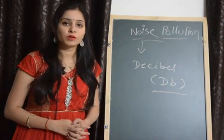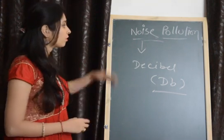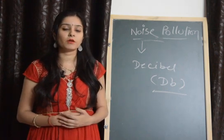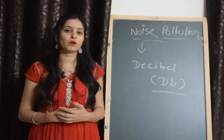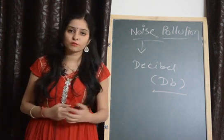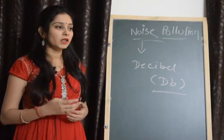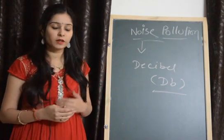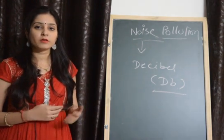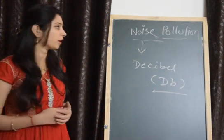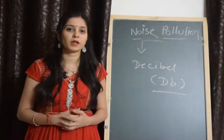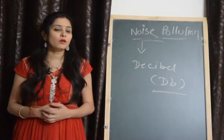What are the main sources of noise pollution? When we talk about different kinds of sources, these sources are related to transportation because many vehicles and automobiles generate a high volume of sound. Aircraft also generate a high level of sound. In homes, various grinders and other machines are used which can create noise pollution. In factories and industries, there are several machines that can cause noise pollution.